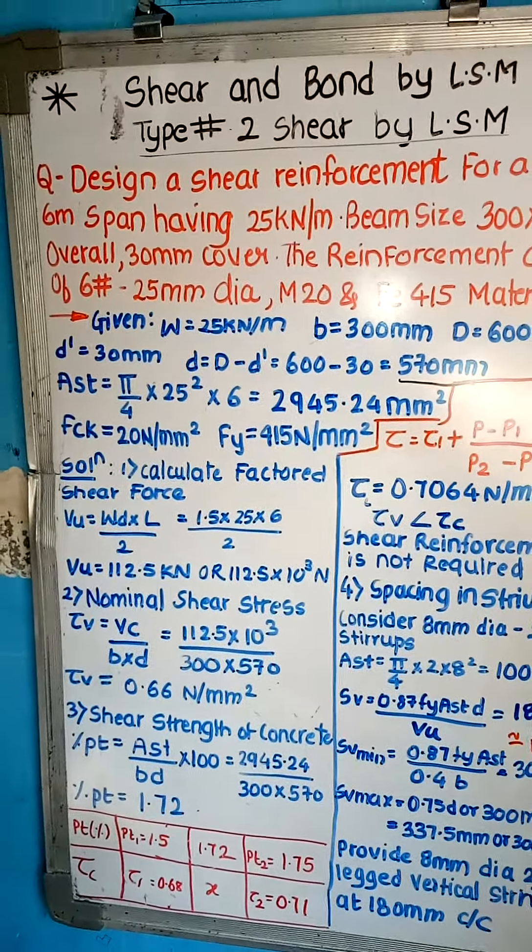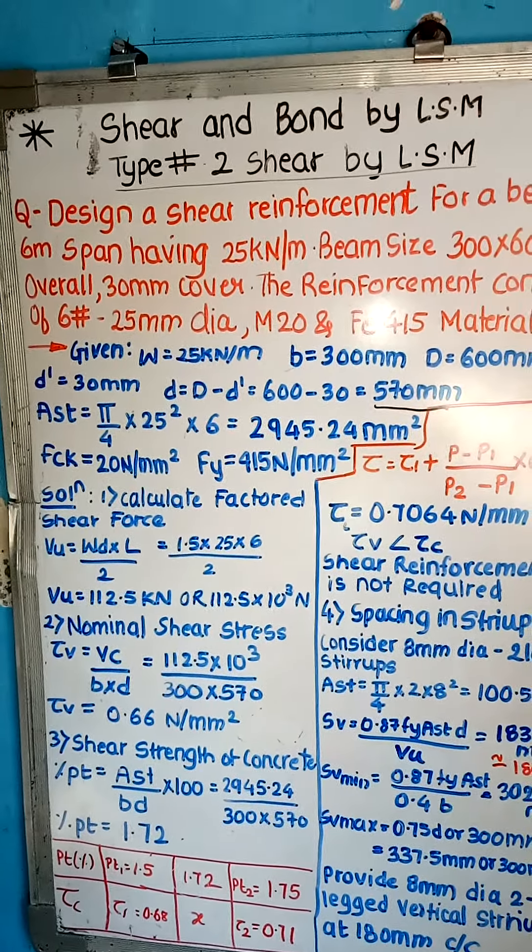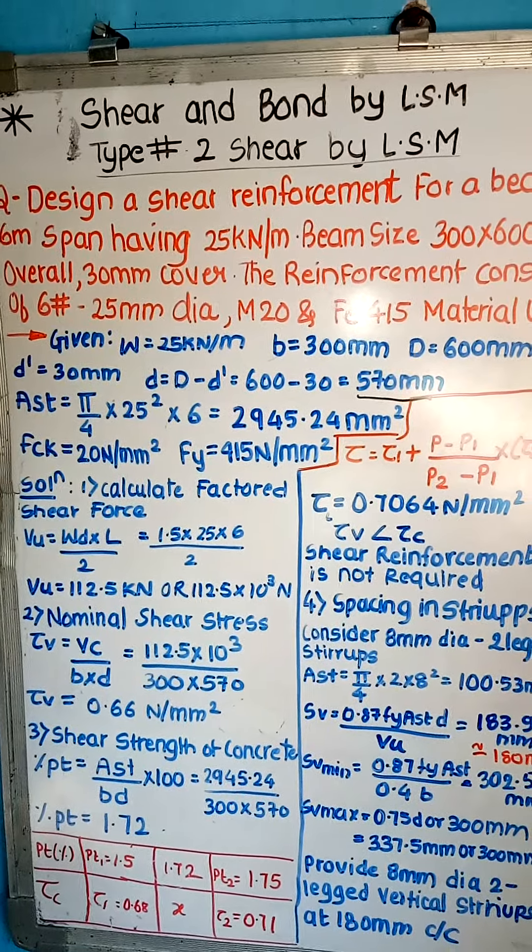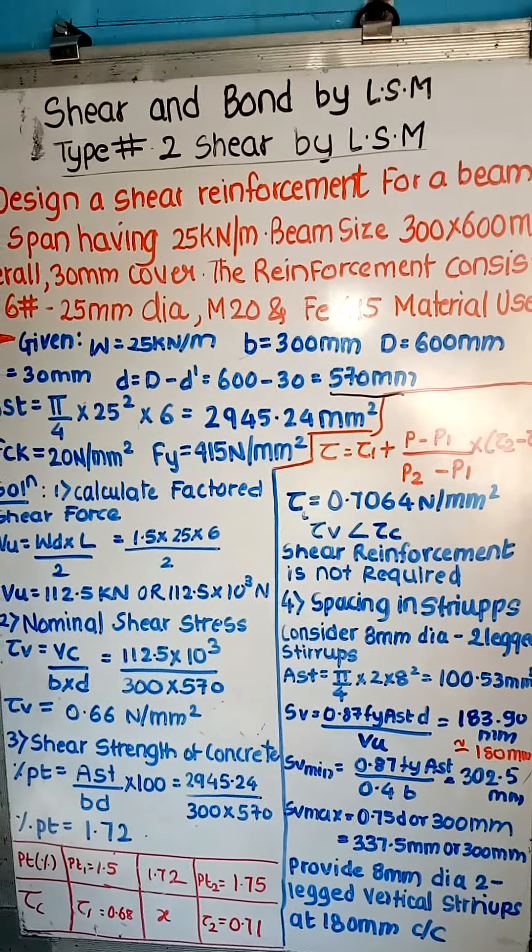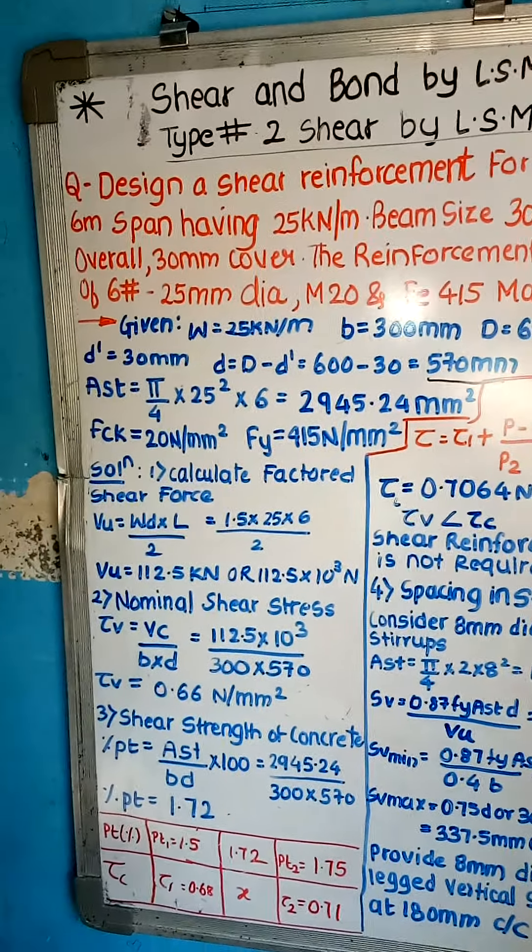Now we can calculate AST. It will be π/4 into 25 square multiply by 6. The answer is 2945.24 mm square.